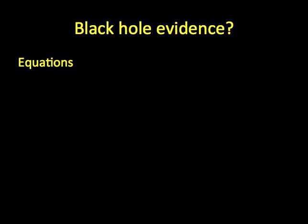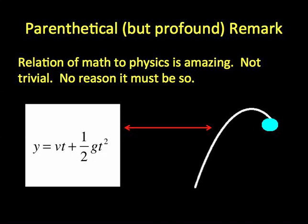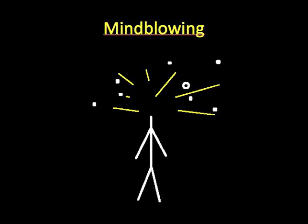And that brings me to an important parenthetical but profound remark about the nature of science and math. The fact that math can be used to describe the natural world is a really startling thing. It doesn't have to be that way. And scientists who write about these things will often comment on how profound this really is. That we can do algebra, which is an abstract thing, and just by doing math, that can describe reality.